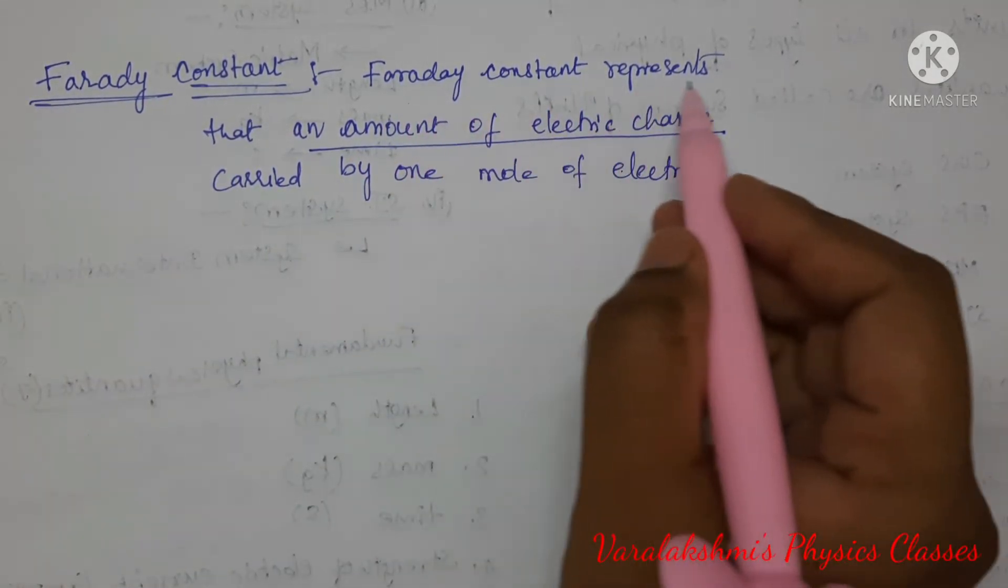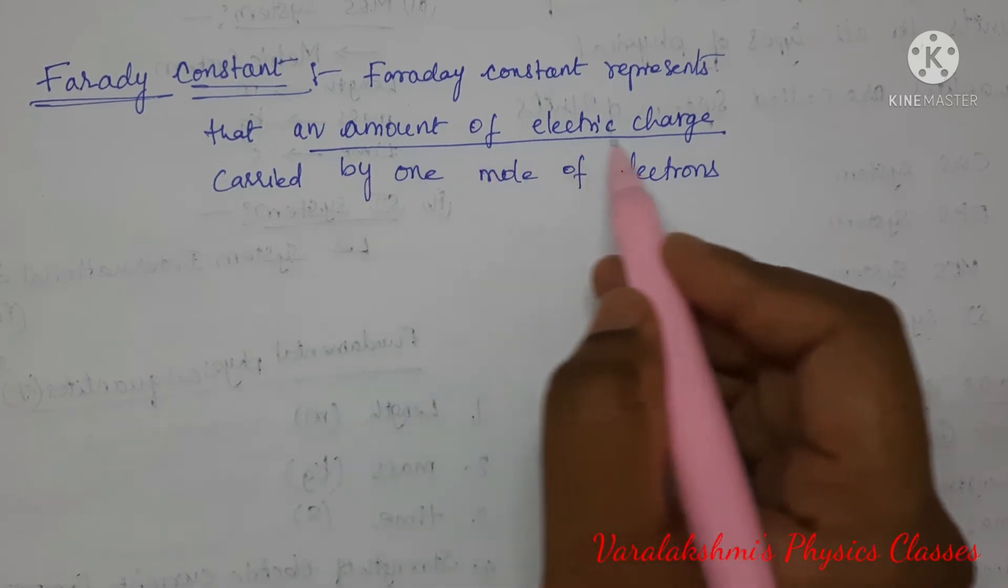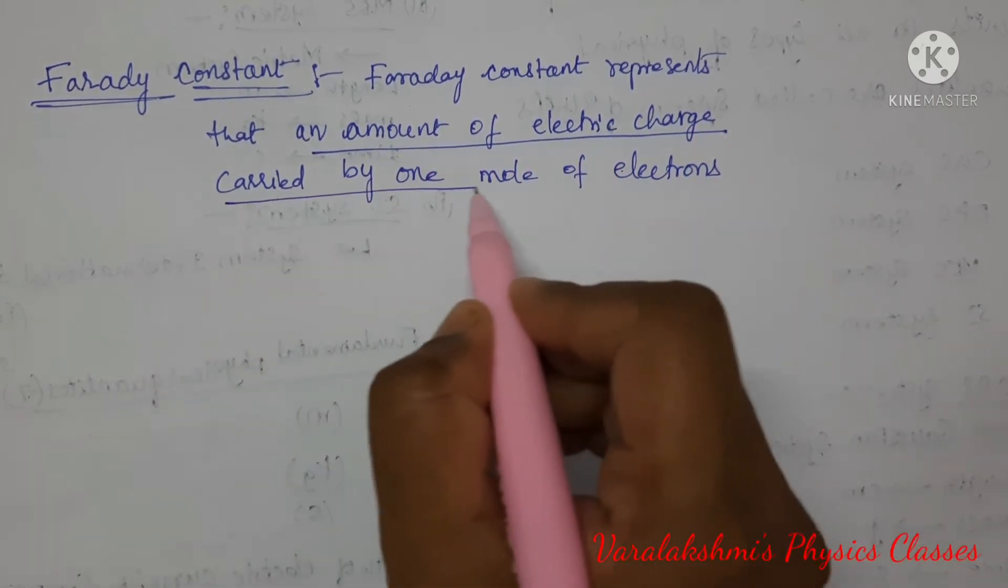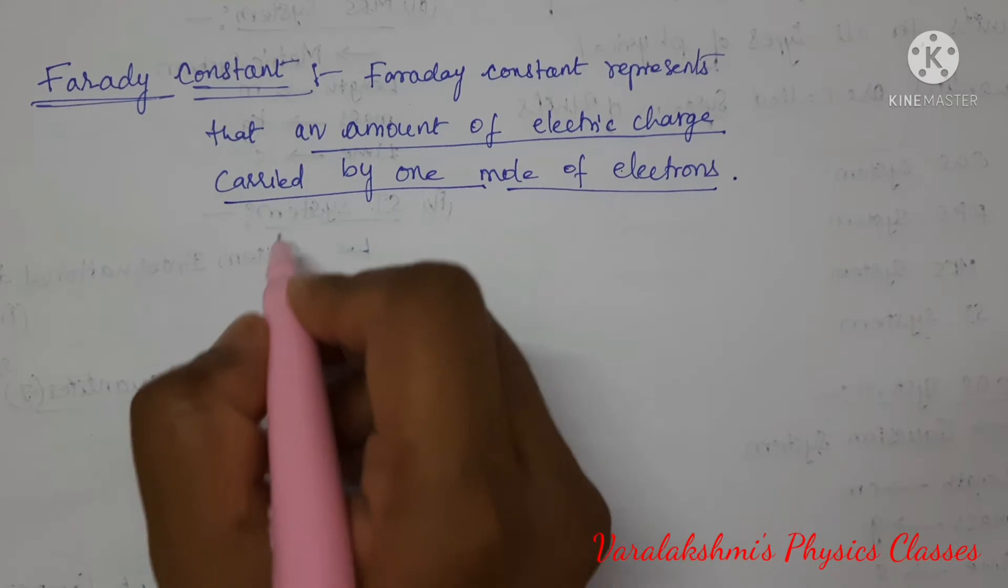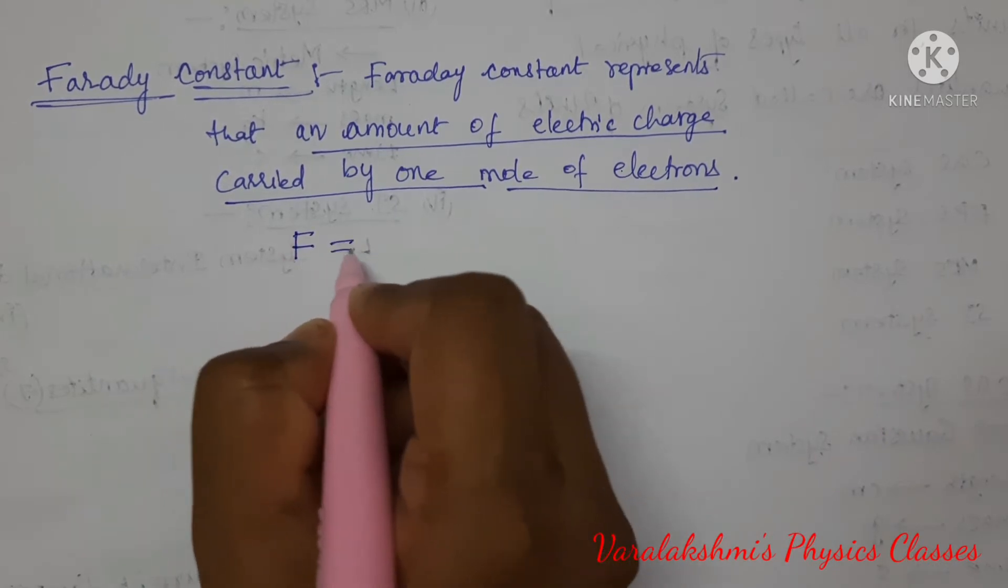Let us see here. Faraday constant represents an amount of electric charge carried by one mole of electrons. Faraday constant is represented with the symbol capital F.